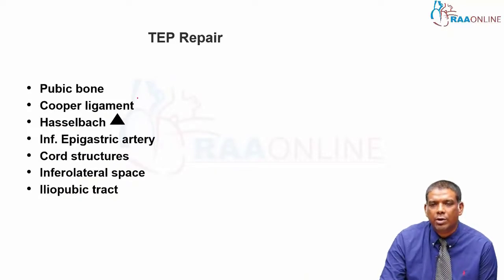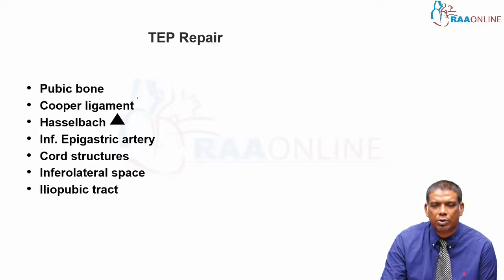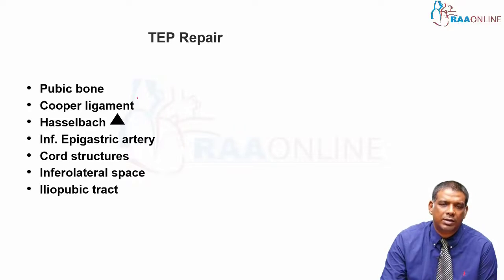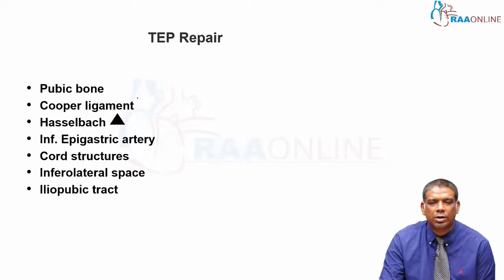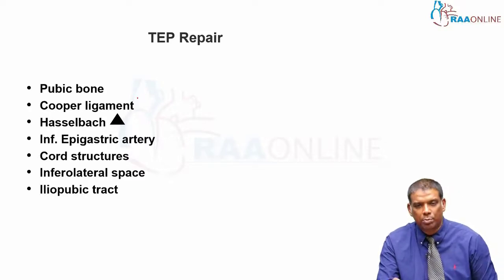Looking at this from a total extraperitoneal repair approach, these are the key structures you will need to identify: the pubic bone, the Cooper's ligament, Hesselbach's triangle, the inferior epigastric artery, the cord structures, the inferolateral space, and the iliopubic tract.